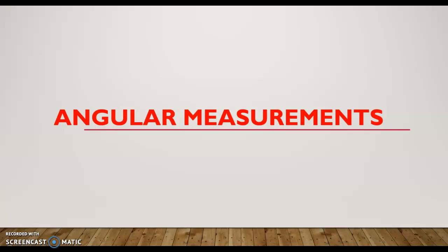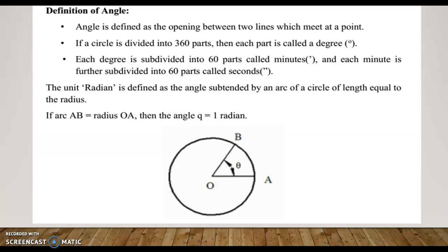In this video, we are discussing angular measurements and construction and working of a vernier bevel protractor. The angle is defined as the opening between two lines which meet at a point. If two lines are meeting at a point, this gap is represented by the angle. If a circle is divided into 360 equal parts, then each part is called a degree.